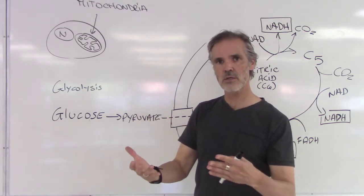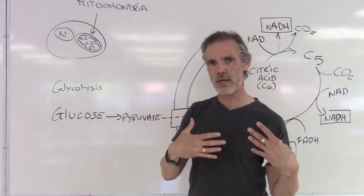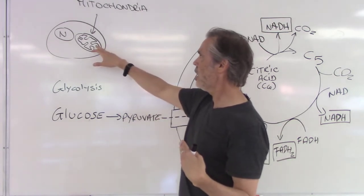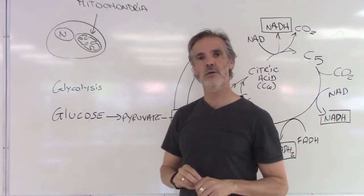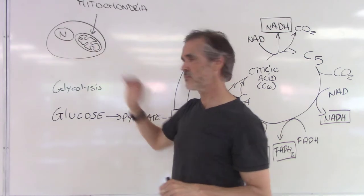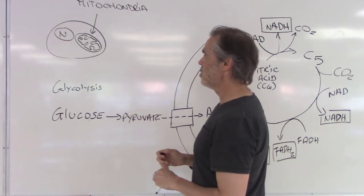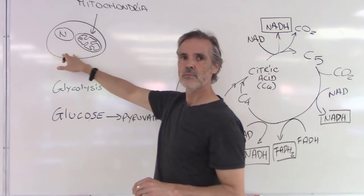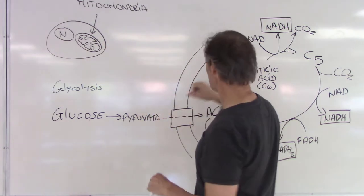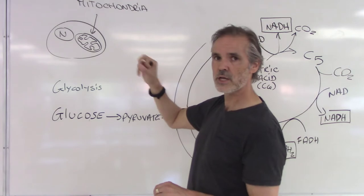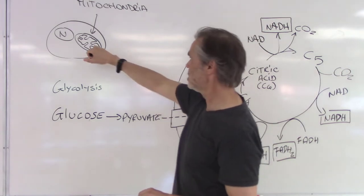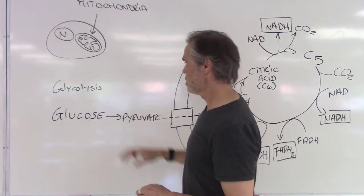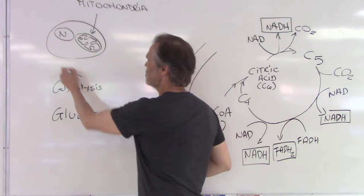All of the enzyme reactions that we're going to look at — and we won't look at them in detail in this video — happen inside the cell matrix. So glycolysis happens inside the cytoplasm. The Krebs cycle, or citric acid cycle, takes place inside the mitochondria, in the matrix. So glycolysis happens right here.